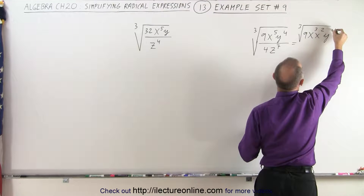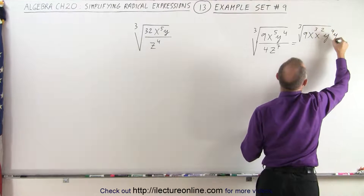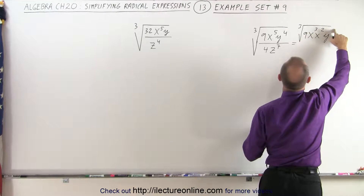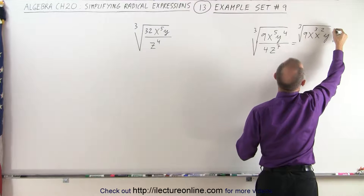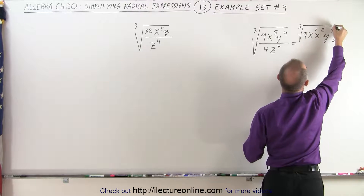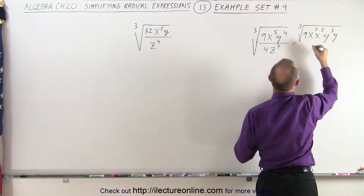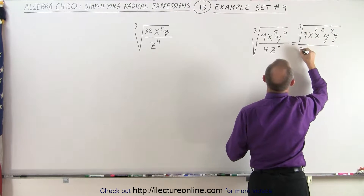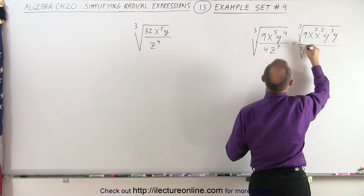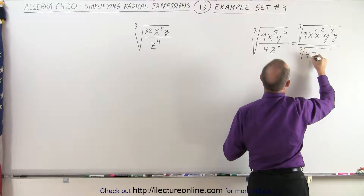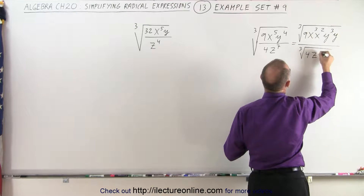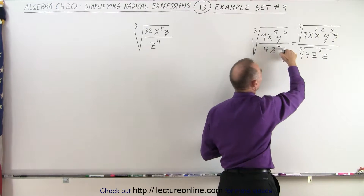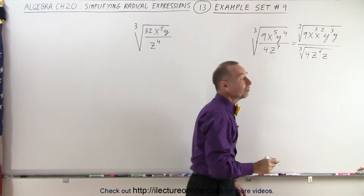And this can be written as y to the third times y. When I multiply, I get y to the fourth back. Divided by the cube root of 4 times z to the sixth times z. Again, when I multiply, I get z to the seventh.